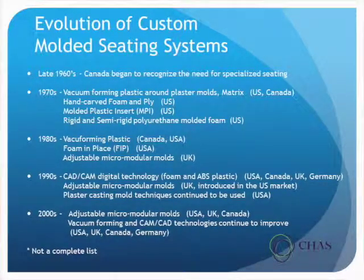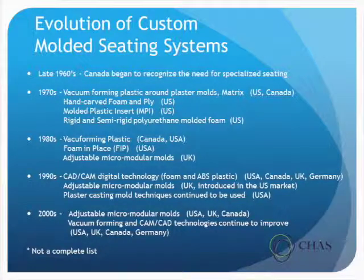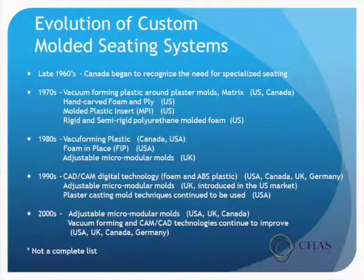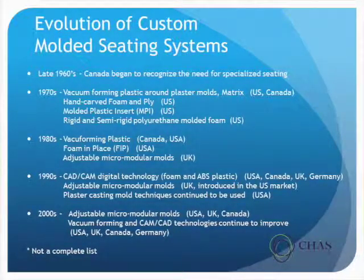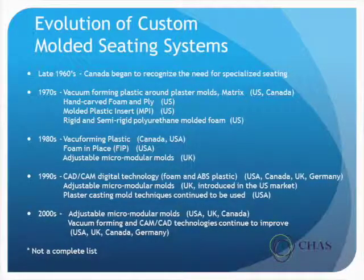This is an overview of the evolution of custom seating. In the late 1960s, Canada began to recognize the need for specialized seating within the cerebral palsy population. Both in Canada and the UK in the 1970s, we primarily used vacuum foam, foaming plastic around plastic molds. Those types of systems were used in Canada and in the US, and then we got into hand carving and plywood type of custom seating.